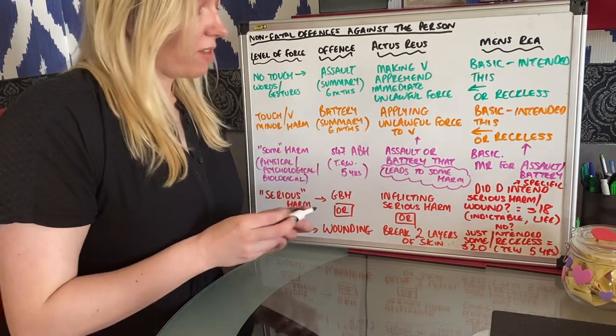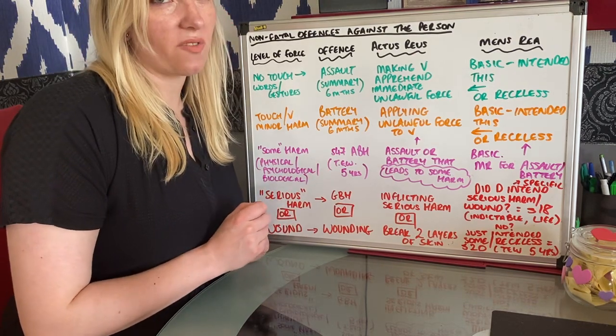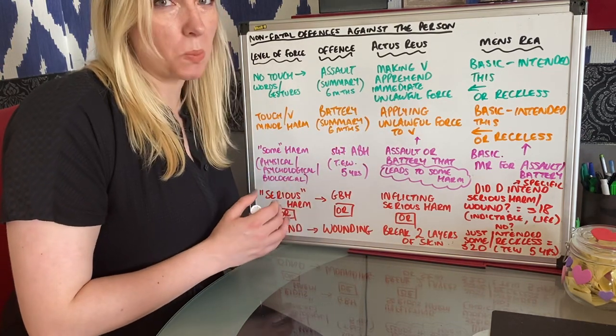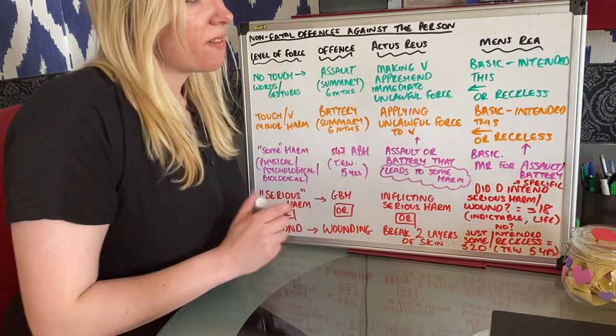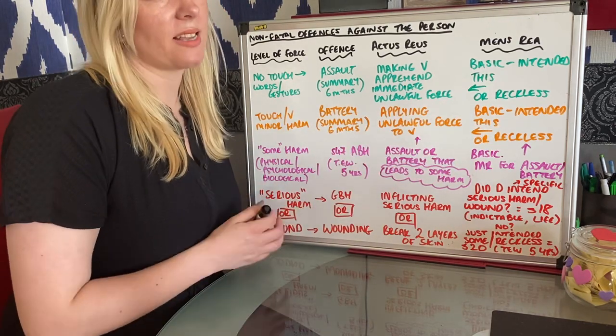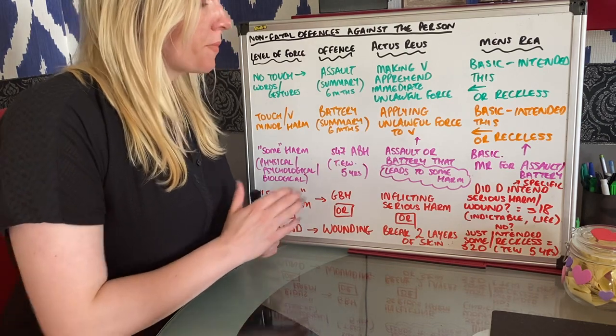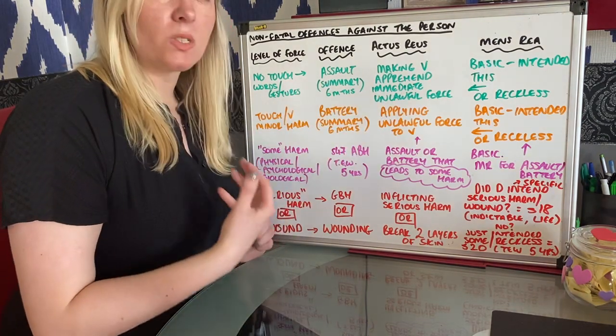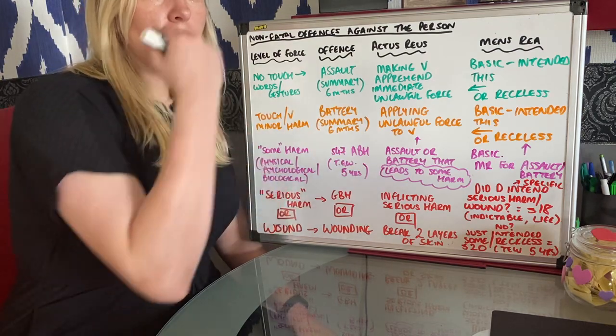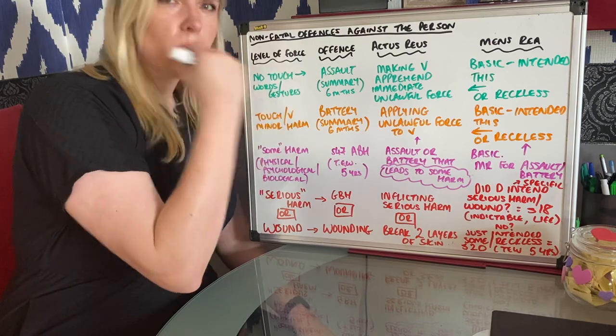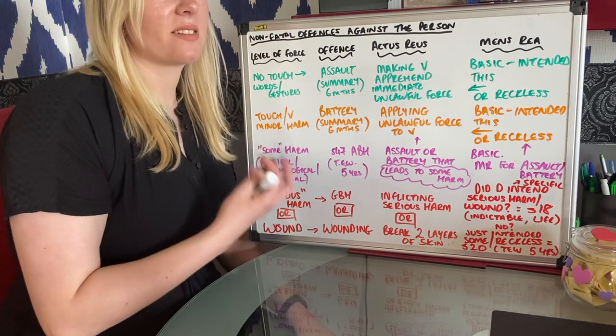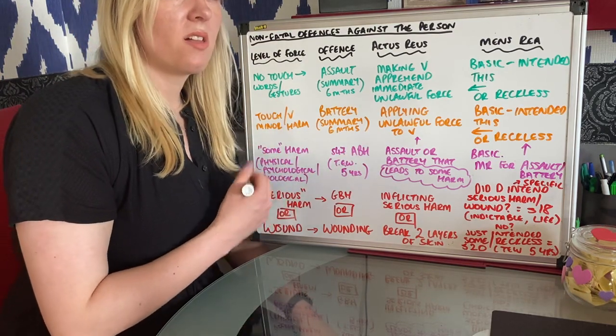The actus reus of battery is simply applying unlawful force to the victim. So perhaps you threatened it here, you do it here - you hit, you slap someone, you grab someone. The mens rea for this, because it's another basic intent offense, is that you either intended to apply force or you were reckless as to it occurring. Now remember, throughout this, think about the person's words as well. You can use negating words to negate an assault. So for example, you might shake your fist at someone which seems to be an assault and you say 'I would beat you up if the teacher wasn't here.' While you're making a gesture, your words actually confirm that the victim is in fact safe and has no need to fear immediate unlawful force, therefore there wouldn't be an assault.